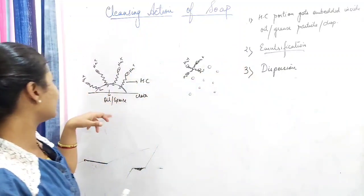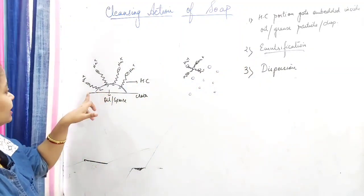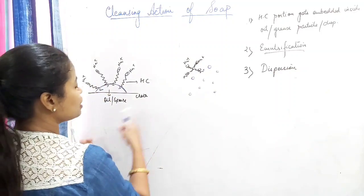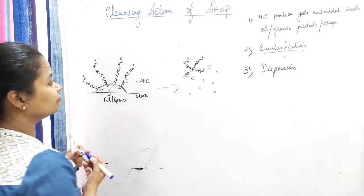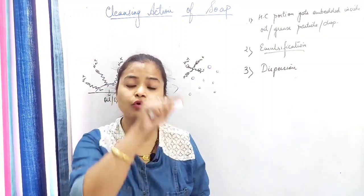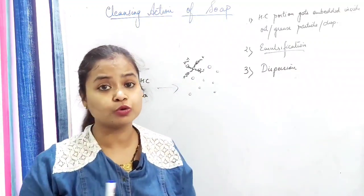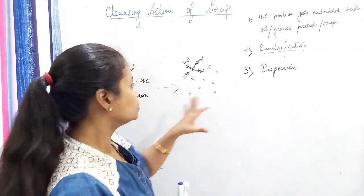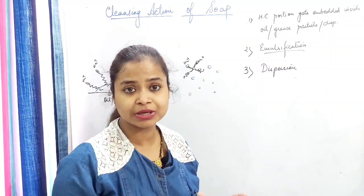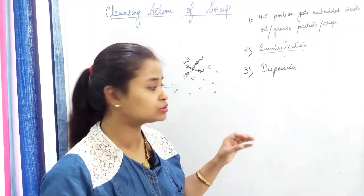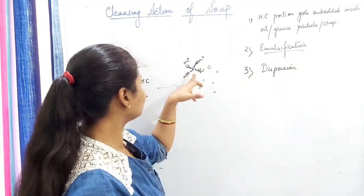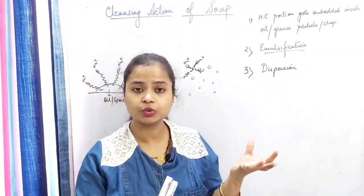To summarize the cleansing action: first, the hydrocarbon portion gets embedded inside oil or grease particles. Second, emulsification occurs — the big oil droplet breaks into many small ones. Third, dispersion occurs when you hand-rub or use a washing machine — the particles are agitated. Fourth, on giving a water wash, the small dispersed oil droplets are washed away by the hydrophilic portion of the soap molecule.